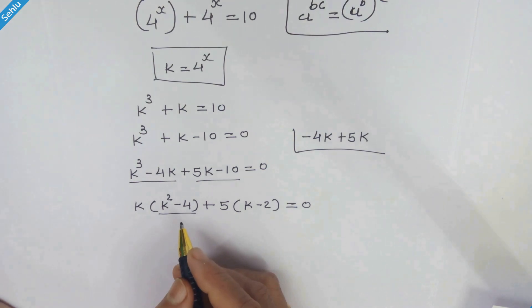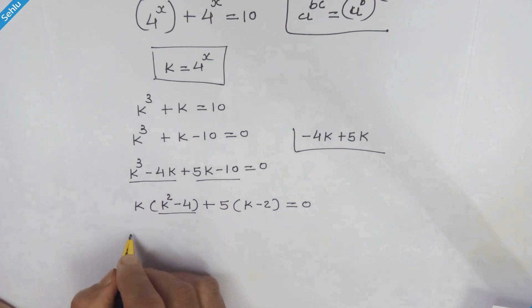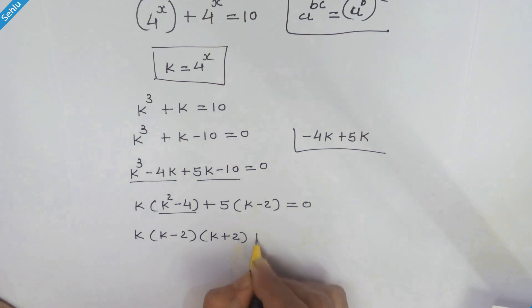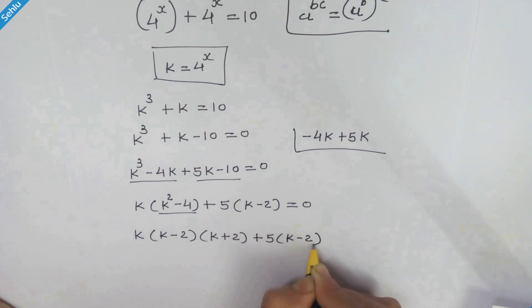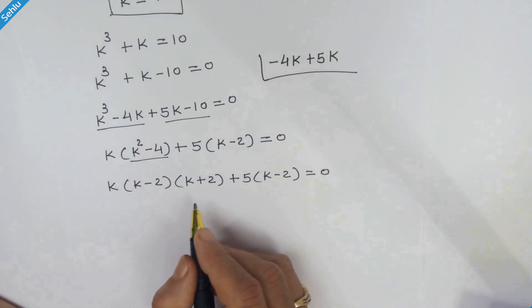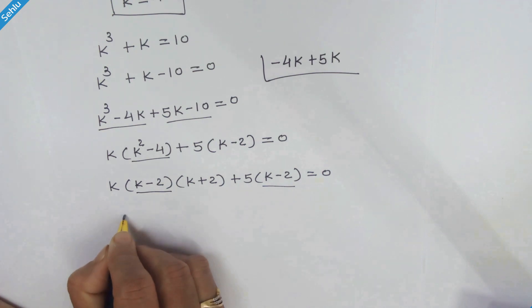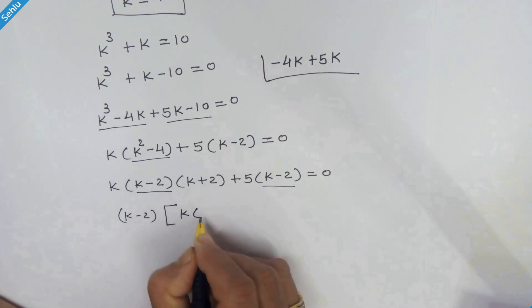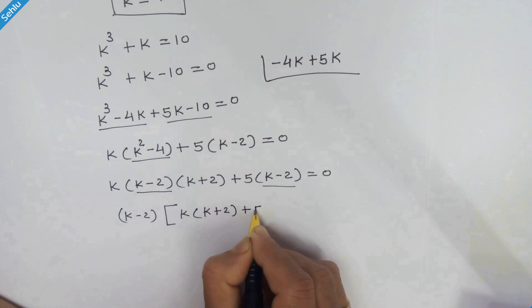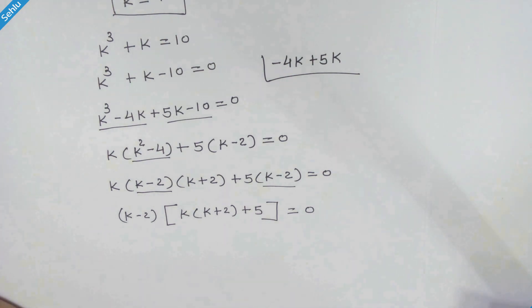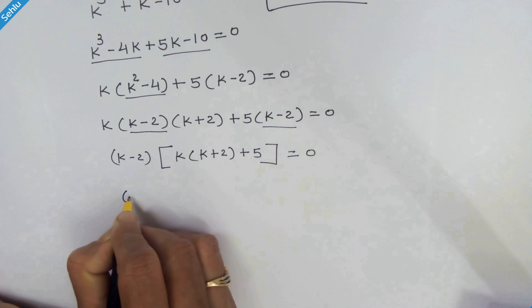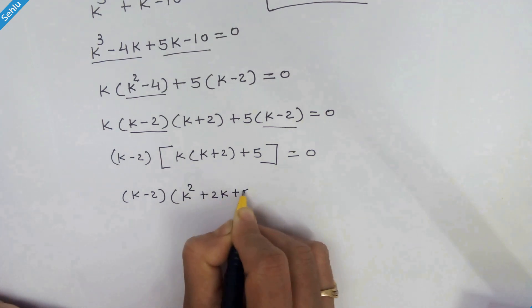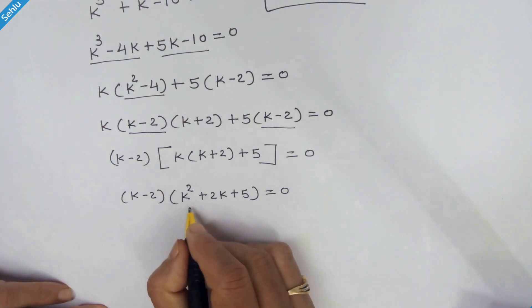Now k squared minus 4 is a difference of two squares, and we know how to factorize it. So we have k times (k minus 2) times (k plus 2) plus 5 times (k minus 2) is equal to 0. Now we can factor out (k minus 2), giving us (k minus 2) times [(k plus 2)(k plus 2) + 5], which simplifies to (k minus 2) times (k squared plus 2k plus 5) is equal to 0.